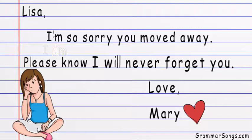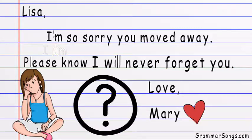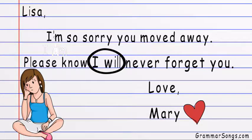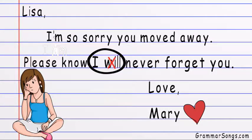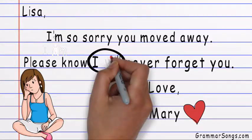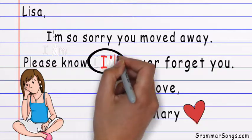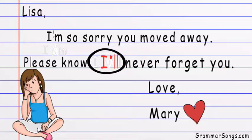Let's read Mary's letter to Lisa one more time. Lisa, I'm so sorry you moved away. Please know I will never forget you. Love, Mary. Do you see any place in Mary's letter where she could make a contraction out of two other words? The words 'I' and 'will' can be combined to form a contraction. To form a contraction from the words 'I will,' we eliminate the W and I and replace them with an apostrophe, forming the contraction 'I'll.' Mary's letter now says: Lisa, I'm so sorry you moved away. Please know I'll never forget you.